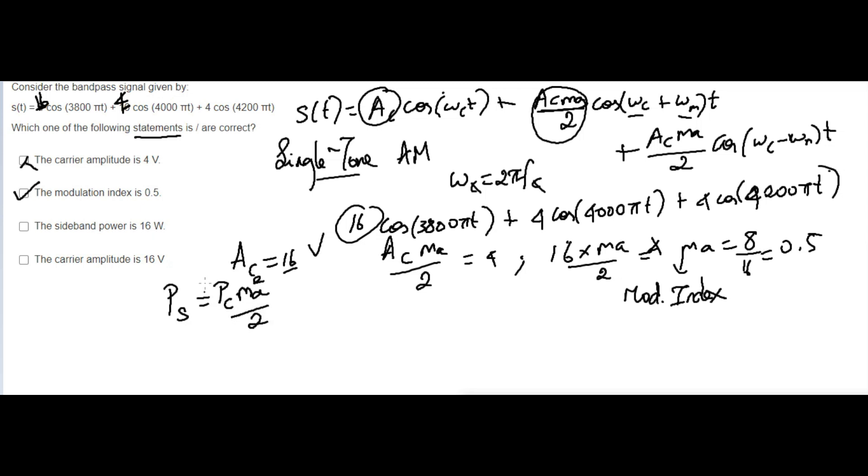But we don't know Pc, right? So Pc formula: Pc equals Ac² divided by 2. So you know Ac is 16, so 16² divided by 2, that equals 256/2, which equals 128.